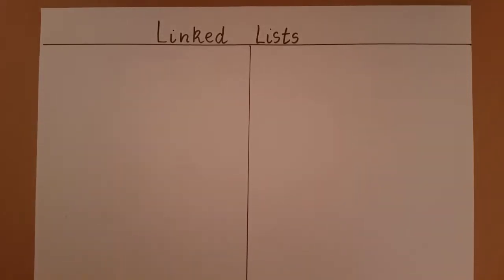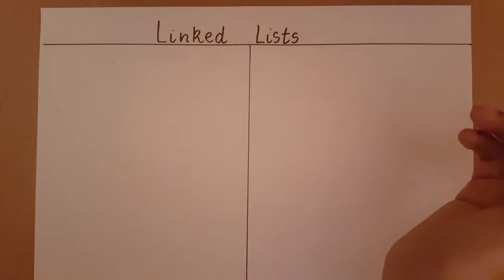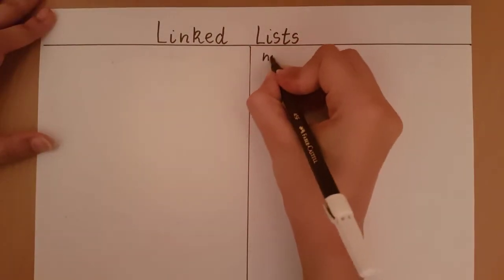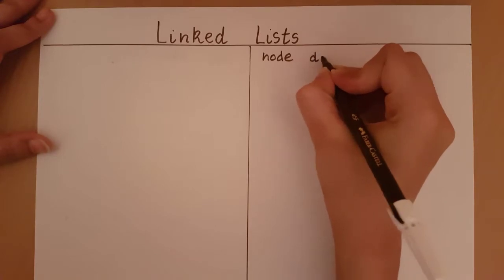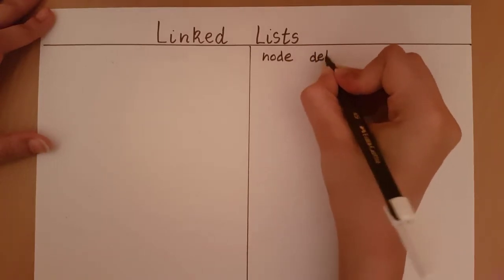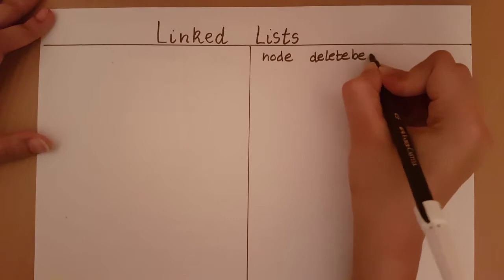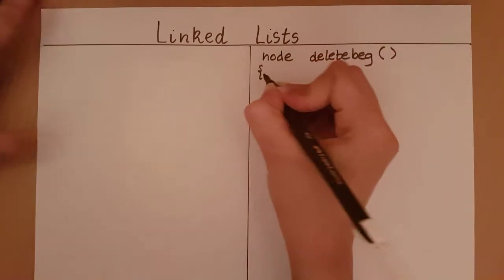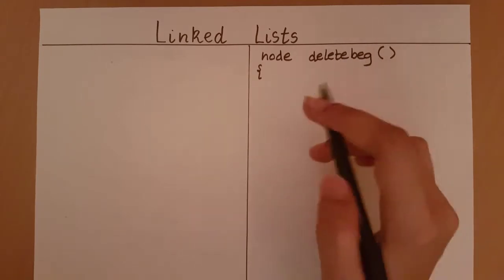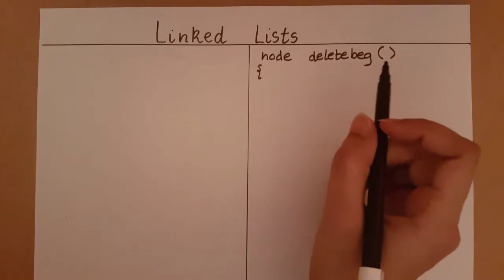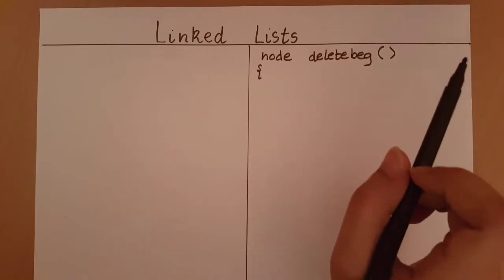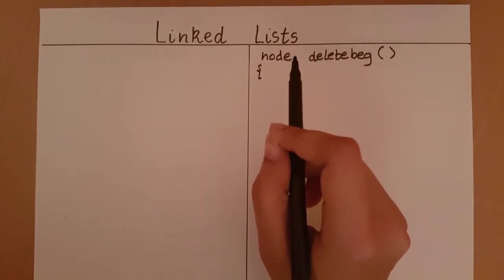In this video, we will take a look at the deletion operation in the linked list, specifically deleting at the beginning of a linked list. I will give an example on one side and write the code on the other. I'm naming my function deletebeg or deletebeginning. I will have no input parameters and I'm going to return the node at which I will delete.